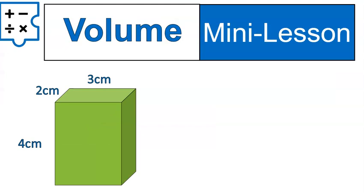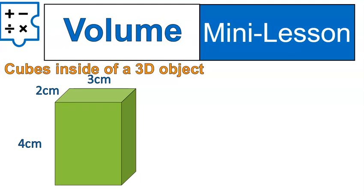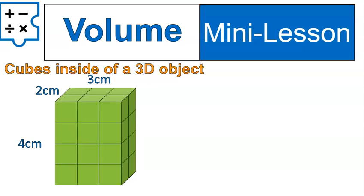First off, volume is the number of cubes inside of a three-dimensional object. So if we're looking at volume, we would typically look at how many cubes are inside there. Cubes are three-dimensional squares on all faces — blocks.